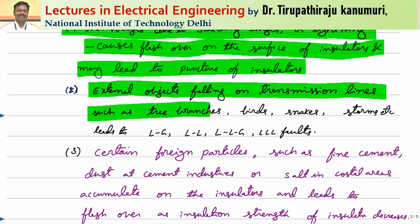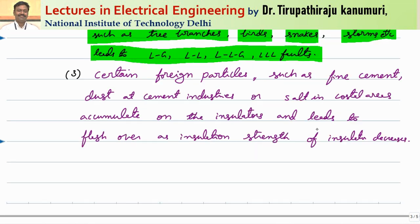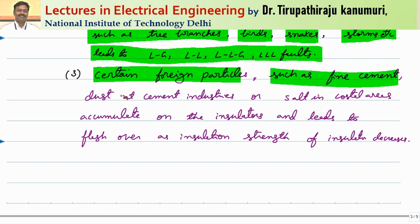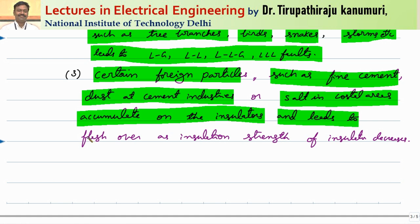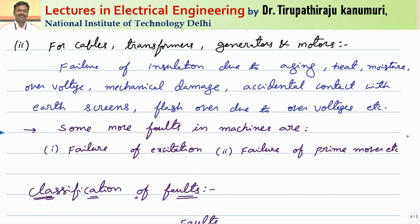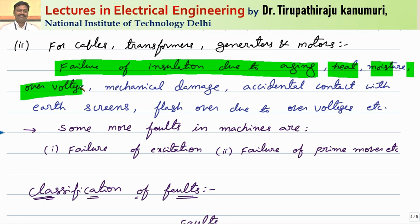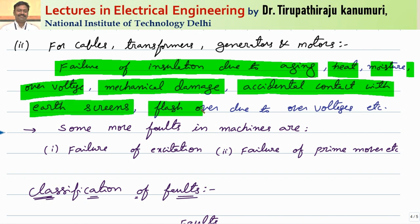Sometimes snakes are also responsible. During storms or rain, conductors will move and may lead to line to ground, line to line, LLG, or triple L faults. Another reason is that foreign particles such as fine cement dust at cement industries or salt in coastal areas accumulate on insulators and lead to flashover as insulation strength decreases drastically over time. For cables, transformers, generators, and motors, failure is due to aging, heat, moisture, over-voltages, mechanical damage, or accidental contact with earth screens.